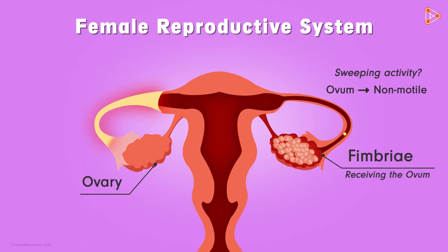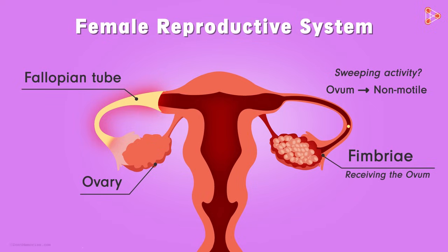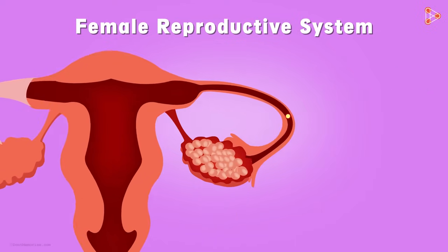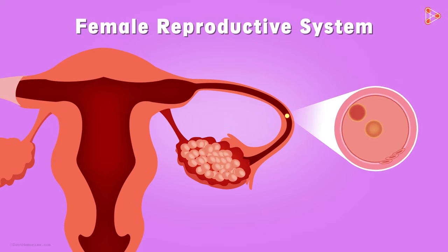Now these tube-like structures also have a scientific name. They are called the Fallopian tubes. They connect the ovaries to the uterus, but more important than this is the fact that the Fallopian tubes are the site of fertilization. It is in the Fallopian tubes where the sperms are able to fertilize the ovum.